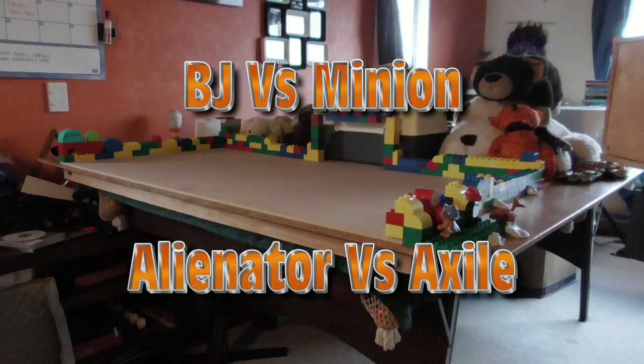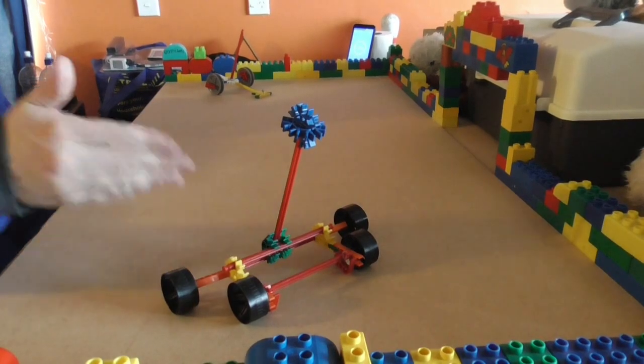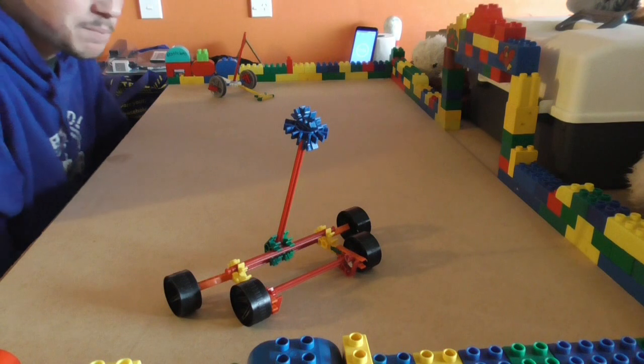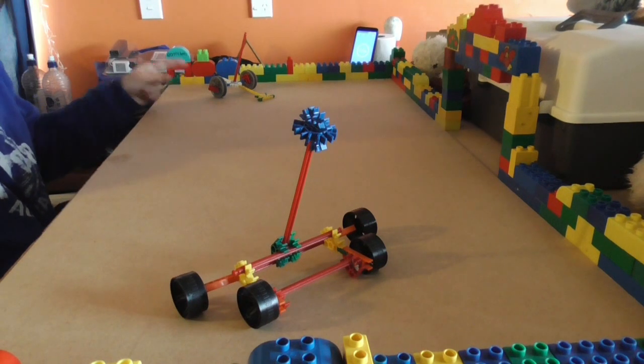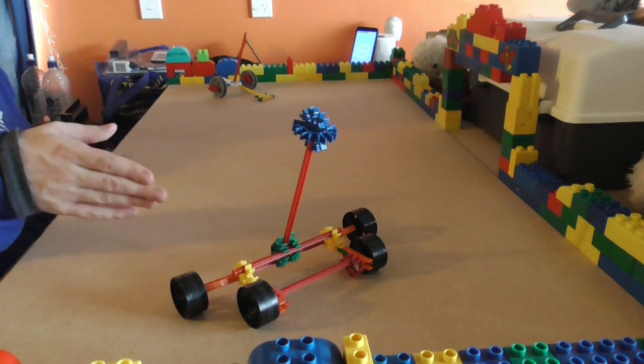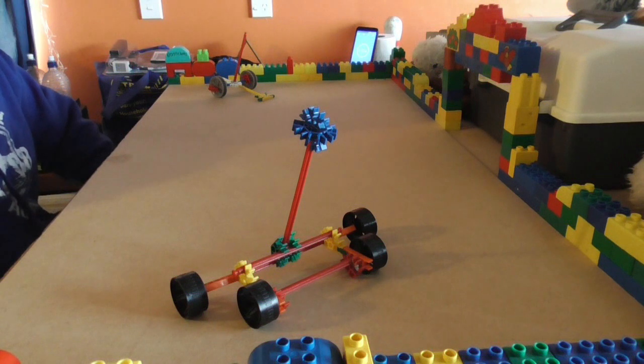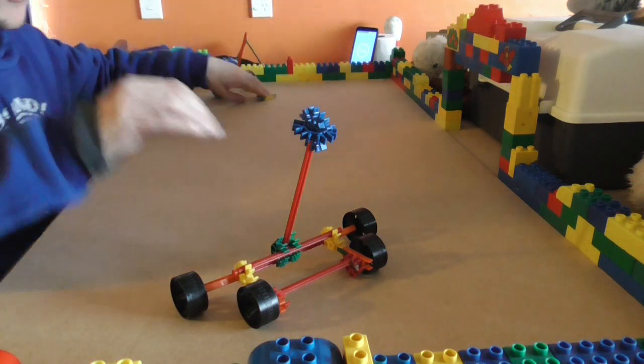Here is the lineup for round two. Alienator will fight Axile, the wild card entry. But first up, BJ against Minion. We've got BJ with its powerful axe against Minion with its lifting arm. This robot is pretty good though, had a pretty quick win against Dropsword. BJ managed to survive against Axile who managed to go through by wild card. In three, two, and we're off.